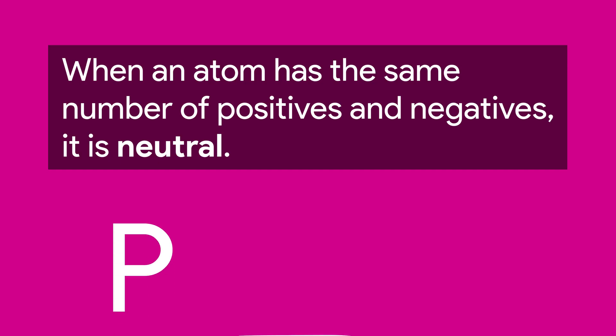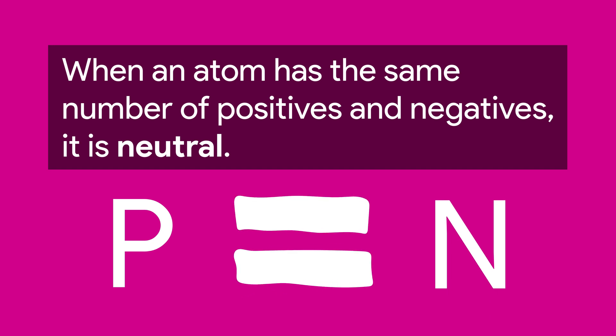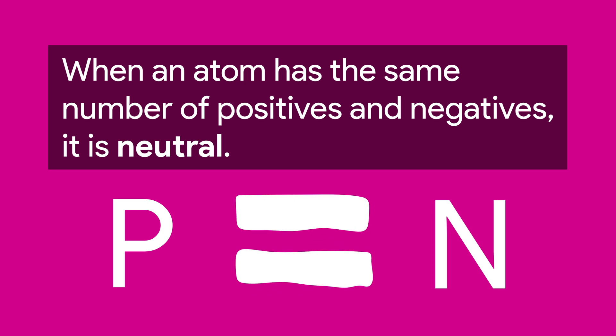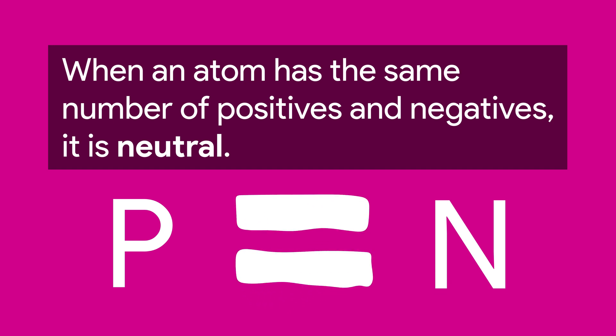In this basic form, neither sodium nor chlorine have a charge. They have the same number of positives as they do negatives. But what would happen if the number of positives or negatives in an atom changed?